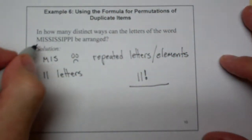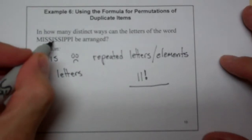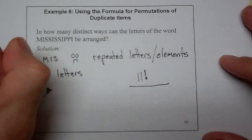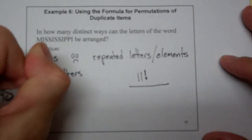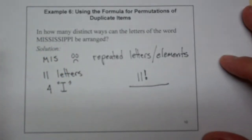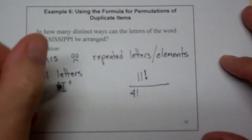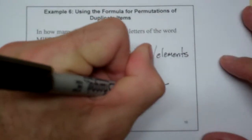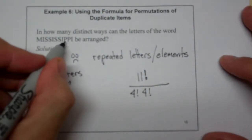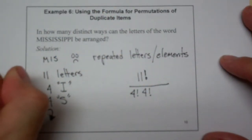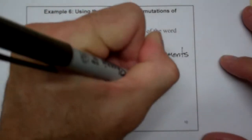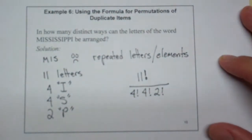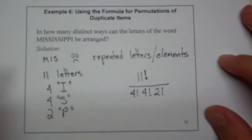Now M is not repeated but I shows up four times. So I have four I's. So that's going to be a four factorial on the bottom. I have four S's. So that's repeated so I'm going to have four factorial on the bottom again. And I have two P's. So with those two P's I have to divide those out and get half the number that I might have had.